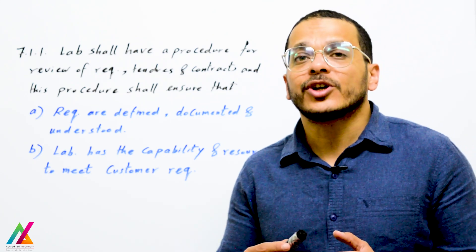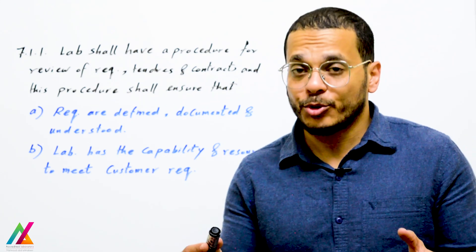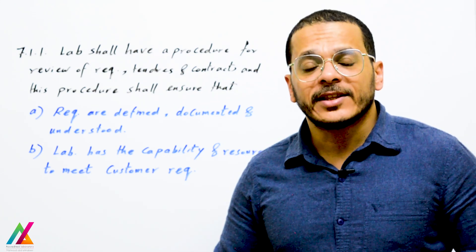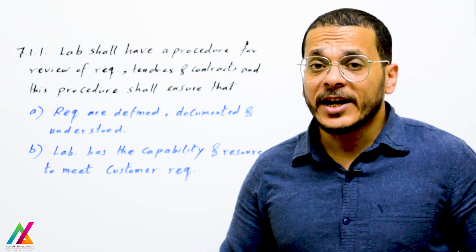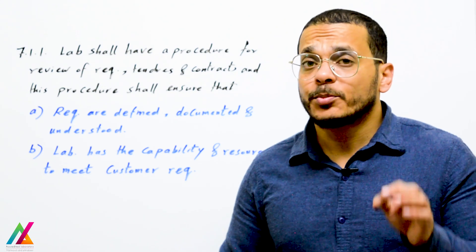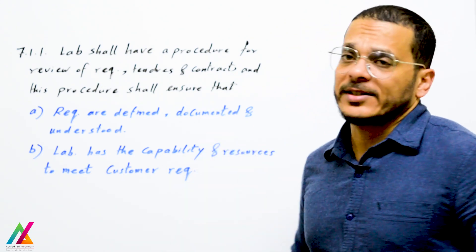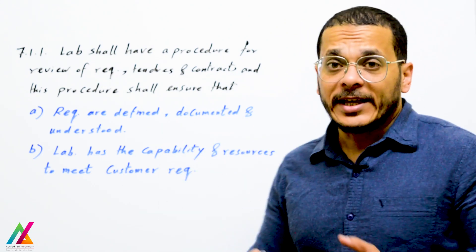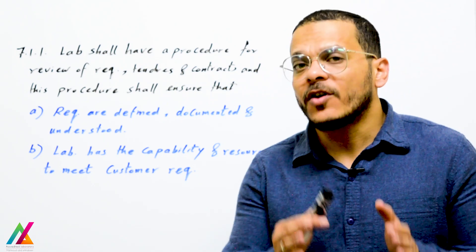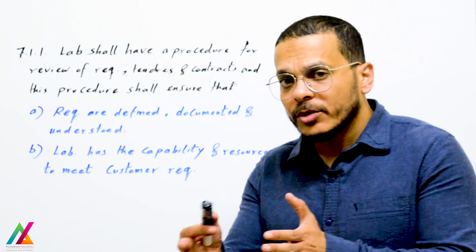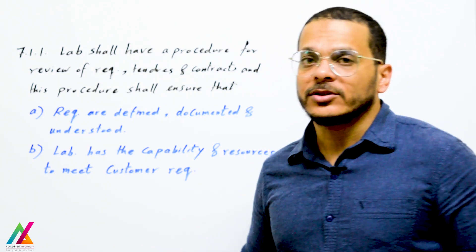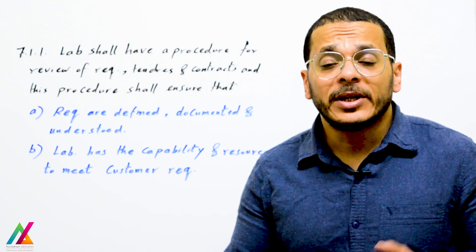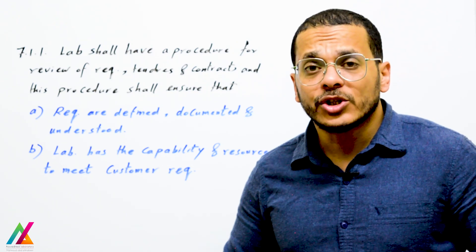The first requirement of this section: the lab shall have a procedure. The lab shall prepare a procedure for review of requests, tenders, and contracts. This procedure shall ensure that requirements for the customer are defined, documented, and understood, and that the lab has the capability and resources to meet customer requirements.